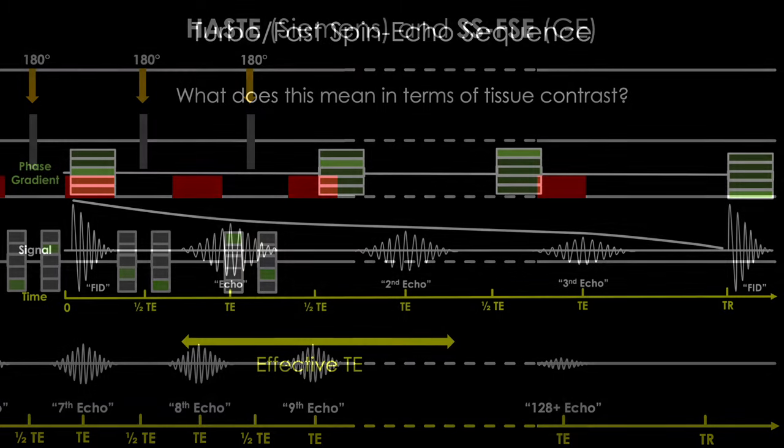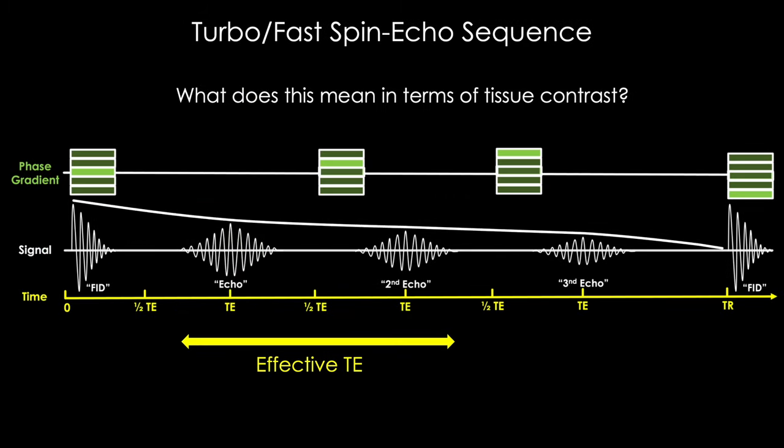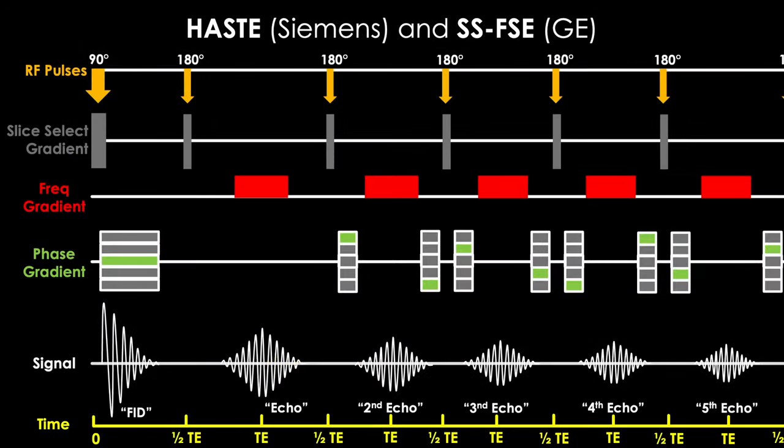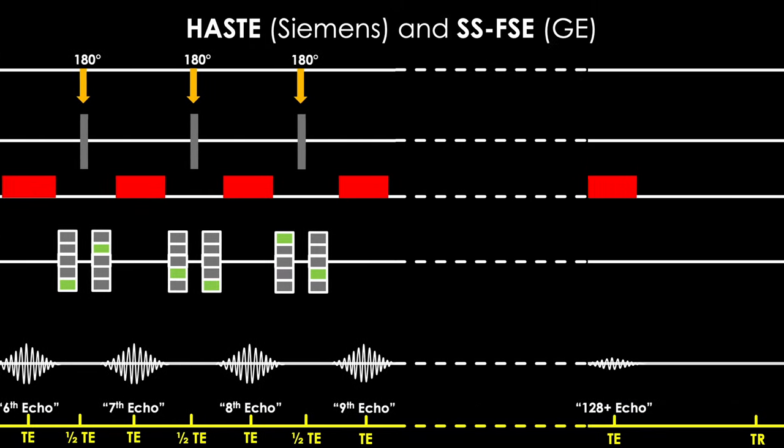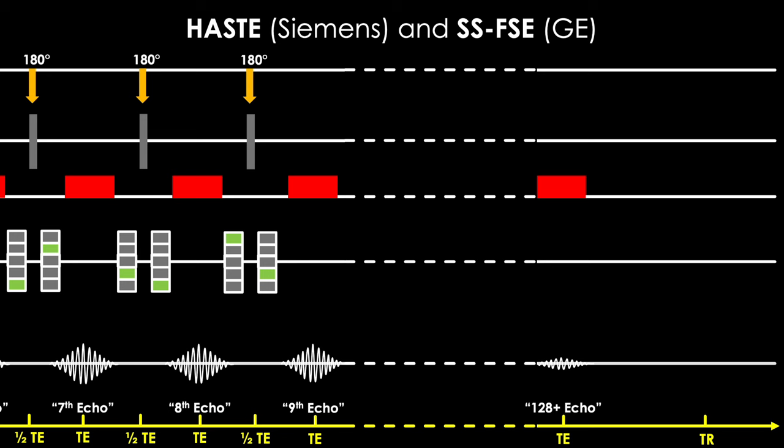Well, remember in the last lecture on the turbo fast spin echo sequence, we saw how creating these echo trains would affect our contrast. And we had to create this concept of an effective TE. Well, you can imagine that if we push this concept even further, and maybe cut corners by synthesizing data, we're going to impact our image contrast and sharpness even more.